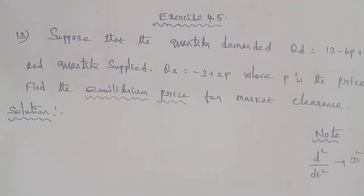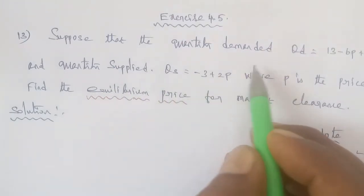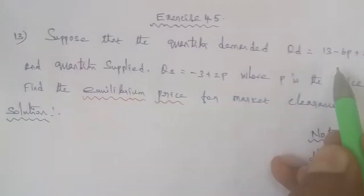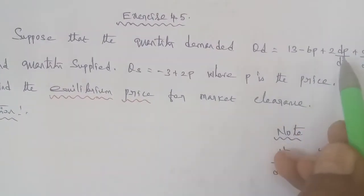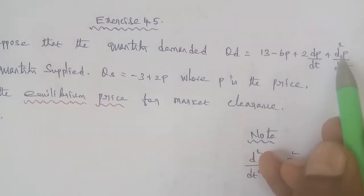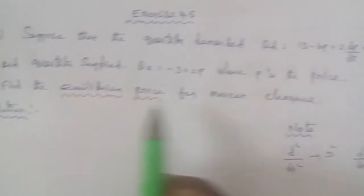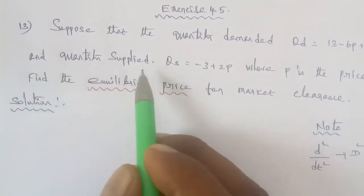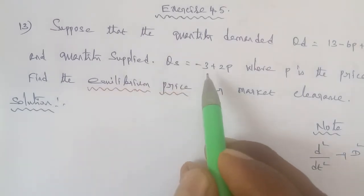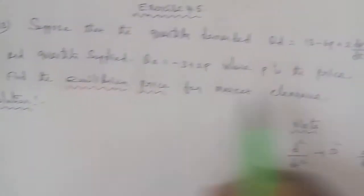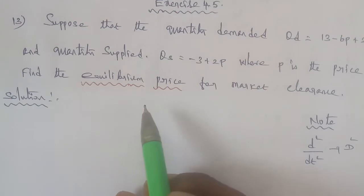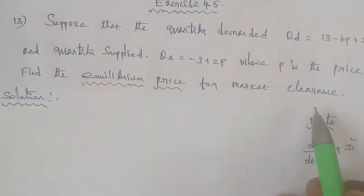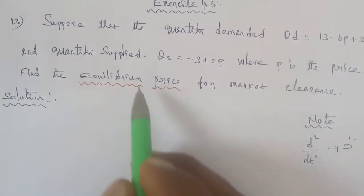Hi students, Exercise 4.5, Question number 13. Suppose that the quantity demanded Qd is equal to 13 minus 6p plus 2 times dp/dt plus d²p/dt² and quantity supplied Qs is equal to minus 3 plus 2p where p is the price. Find the equilibrium price for market clearance.